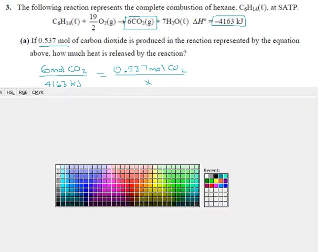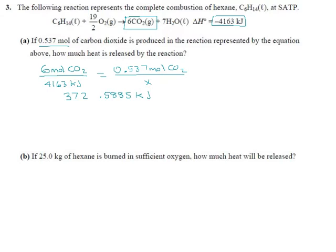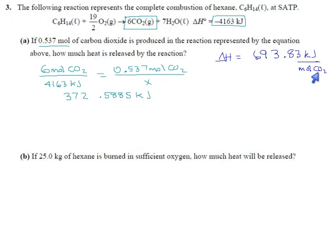If you want to do it with delta H's: for carbon dioxide, if you get 4163 kilojoules for 6 moles of carbon dioxide, you do 4163 divided by 6, because we want kilojoules for just one mole. We get the delta H for this reaction as 693.83 kilojoules for every mole of CO2. The reaction assumes you're using 6 moles because that's what they got when they balanced it. The delta H is saying for every mole of CO2, this much. Once you have that number you can say energy equals N delta H.